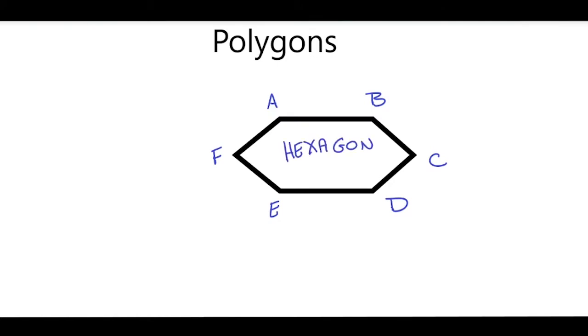So if I asked you to label and name this, or classify this polygon and name it, I would call this hexagon A, B, C, D, E, F. It doesn't matter where you start, as long as you go clockwise around the polygon when you're naming it.